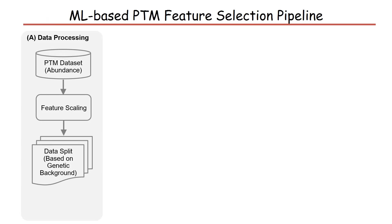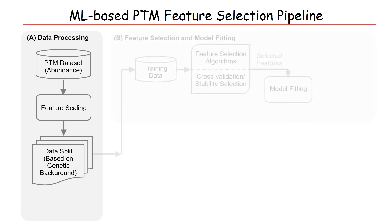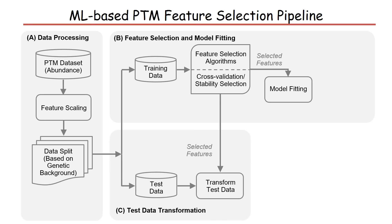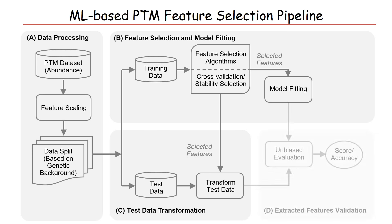The first step in the feature selection pipeline is data pre-processing. The filtered PTM abundance data is scaled so that values of each feature have zero mean and unit variance. Then the data is split into training and testing sets based on genetic background — mouse strain samples from a family group used for training should not be used for testing. In the second phase, multiple feature selection methods are run, encapsulated within cross-validation or stability selection to identify discriminative features between control and ISO treatment. The selected features are then used to train a predictive model and also to transform the test data to the reduced feature space. Finally, the selected features are validated through unbiased evaluation of the model on the test data.